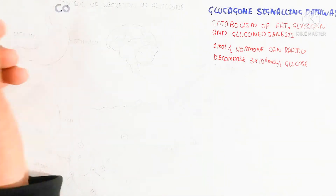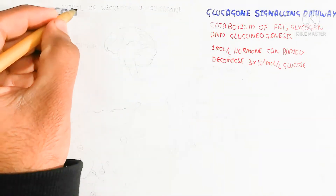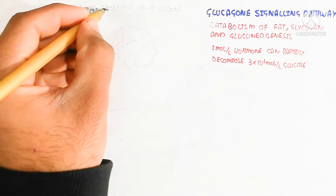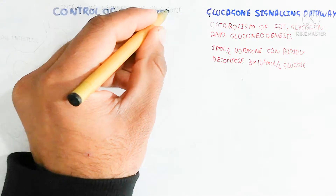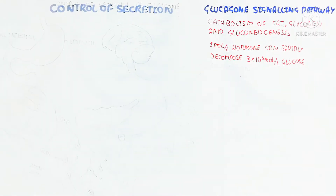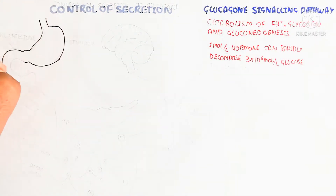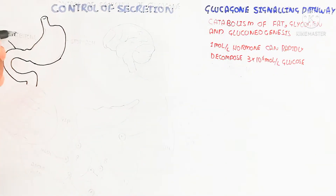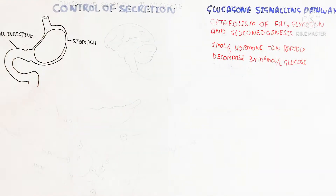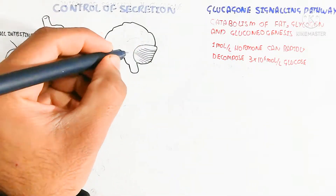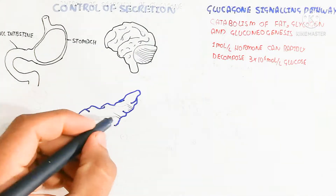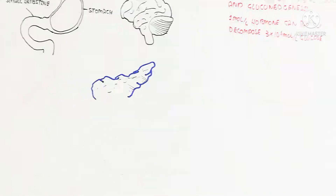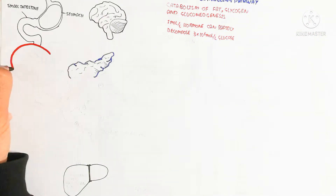Let's begin to understand, first of all, the control of secretion, and next we will discuss the cellular mechanism. The control of secretion involves the stomach, the brain, the pancreas, and the liver.